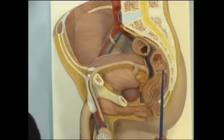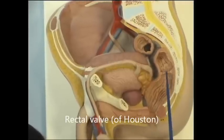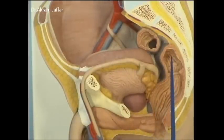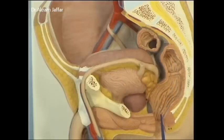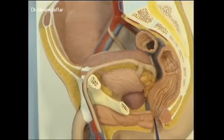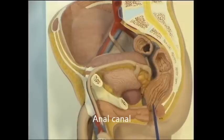Inside the rectum, you notice here one of the valves of Houston — the rectal valves of Houston. Three of these valves are present. The rectum, as you can see here, is not straight. It is concave, following the concavity of the sacrum. The rectum passes through the pelvic diaphragm and gives rise to the anal canal, with an angulation at the recto-anal junction.